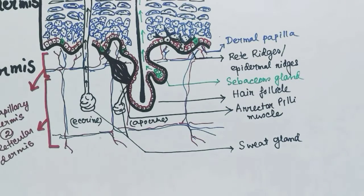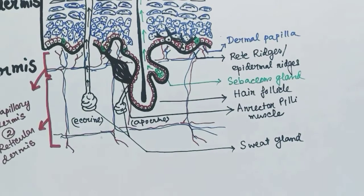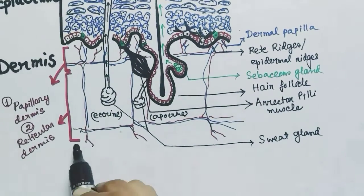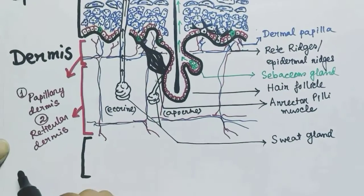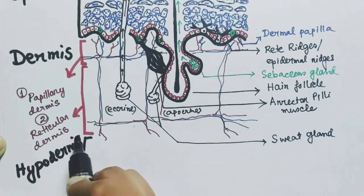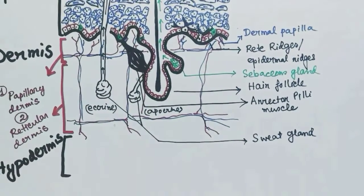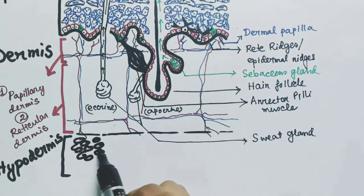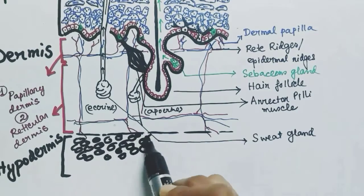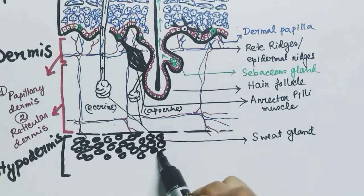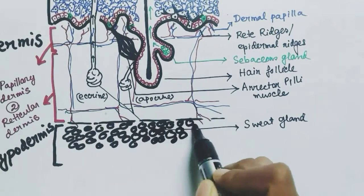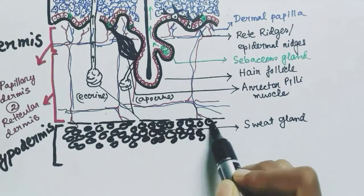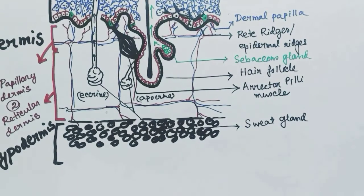Below the dermis is the hypodermis layer. The hypodermis consists of adipose tissues — the fat cells — which store fat beneath the skin.